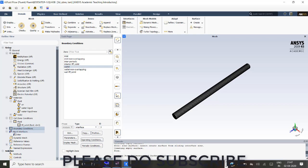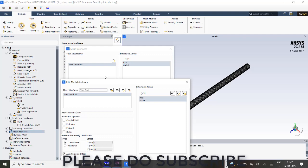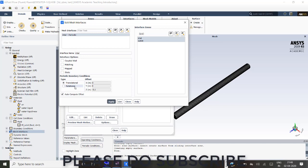After that you just go to mesh interface, and I have created manually the mesh interface. You can see what I have created. This is what I have created. I have given a translational periodic boundary condition with Z as 0.1 as my offset condition. I have created this interface.